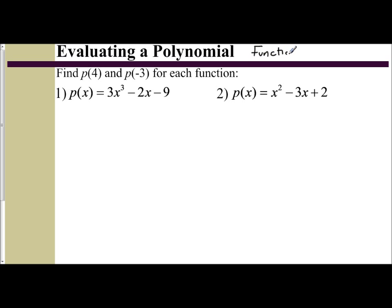Remember, function notation is just a fancy way of evaluating a polynomial. What you do is you're taking your 4, and you're going to be plugging it in for your x in the polynomial. So if I want to do P(4), what that means is replace your x value in the polynomial with 4.